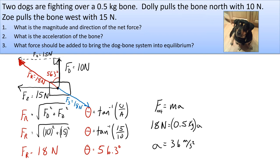F3 has to be equal in magnitude to the resultant force to cancel it out, and it should be in the exact opposite direction. Using alternate interior angles, we can look at our free body diagram and see that the angle is 56.3 degrees. So F3 equals 18 newtons at 56.3 degrees — it looks like it's going East of South, so that many degrees East of South.